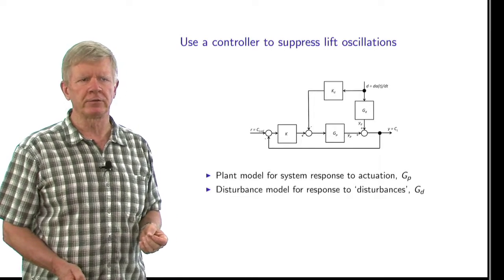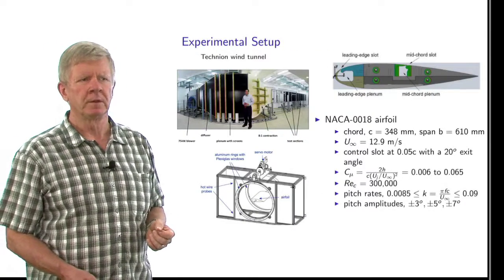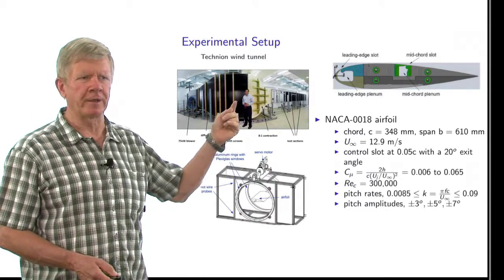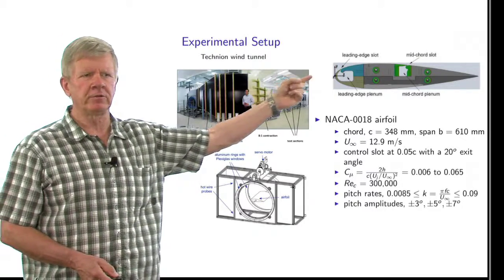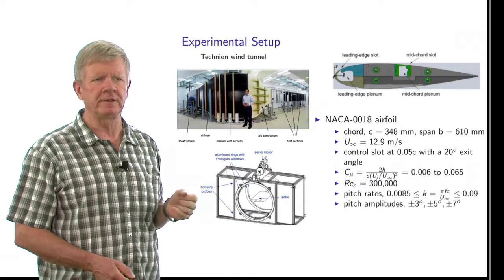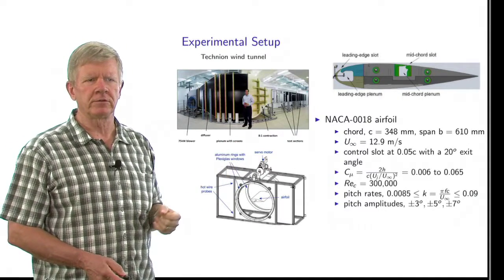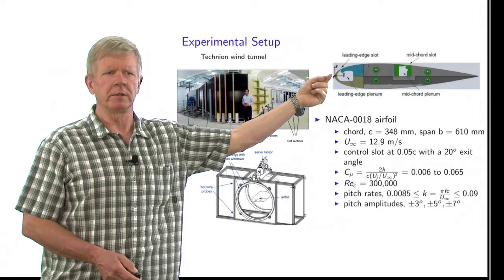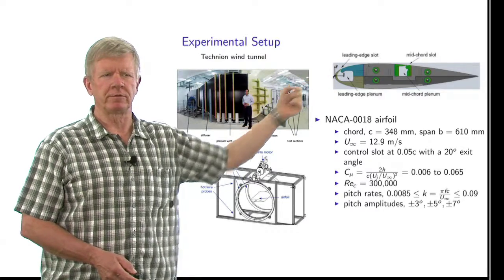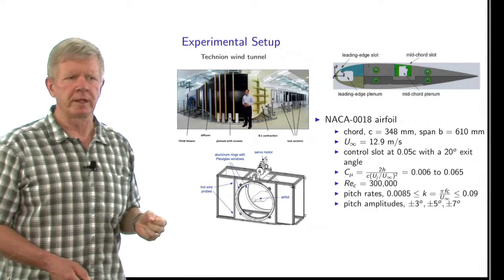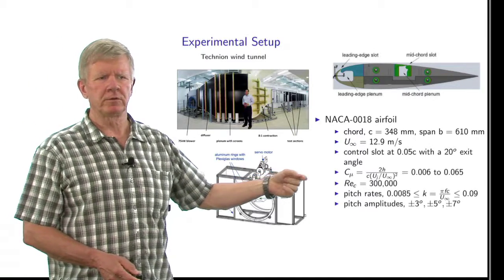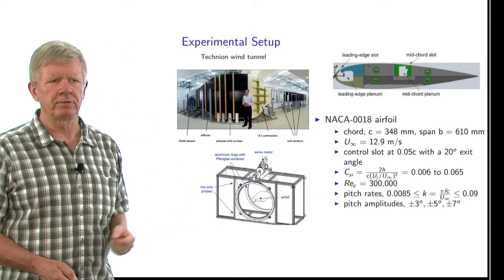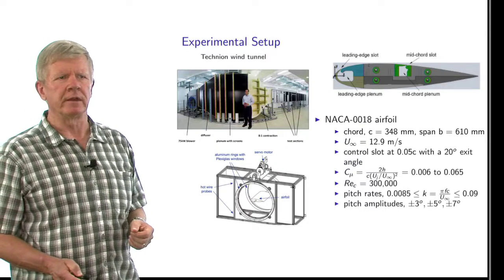So once we have those two models, then we can design a controller for it. The experiments are being done at Technion under the guidance of Professor David Greenblatt, who is shown here by his wind tunnel. The model he is using is an NACA0018 airfoil, and he has a blowing jet type of actuation located in the leading edge of the wing, and it exits at about 5% chord. He can control the amplitude of that jet, and the amplitude is measured by this coefficient C sub mu. So we need to know how does the airfoil respond when we vary that forcing amplitude.